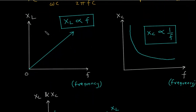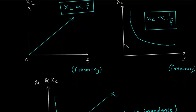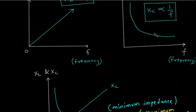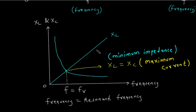The relation between frequency and inductive reactance shows that inductive reactance is directly proportional to frequency — as frequency increases, inductive reactance also increases. In the case of capacitive reactance, it is inversely proportional to frequency — as frequency increases, capacitive reactance decreases. If we combine these two graphs, at a certain point XL equals Xc, which is the minimum impedance point or maximum current point, and the frequency at this point is the resonant frequency.